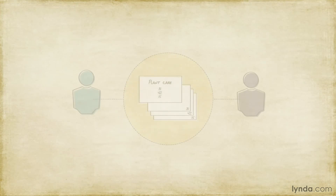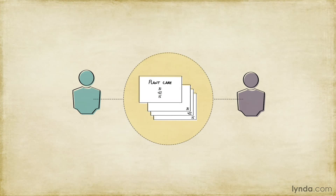After they've gone, record the numbers of all the cards in each group on the card the participant used to label the group. That way, you have a written record of the card sort. Now you can gather up all the card sort cards, shuffle them so they're in a random order, and leave them ready for the next participant.